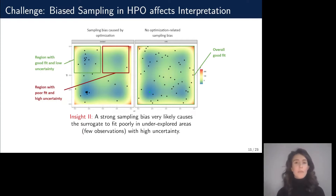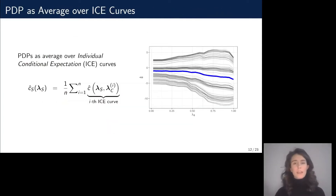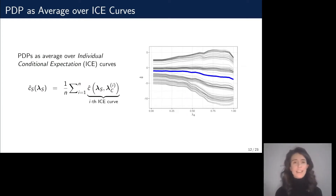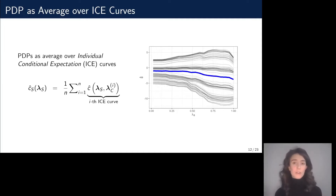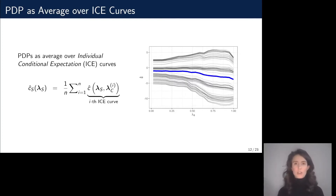What happens if we naively apply the partial dependence plot on a surrogate model created from data with a sampling bias? The partial dependence plot is essentially a mean estimate — an average over curves. Under the Monte Carlo sum, if we fix the sampled lambda_c_i values, we have a function that takes lambda_s as its argument. Therefore, the partial dependence plot is an average over curves called individual conditional expectation, or ICE curves for short.